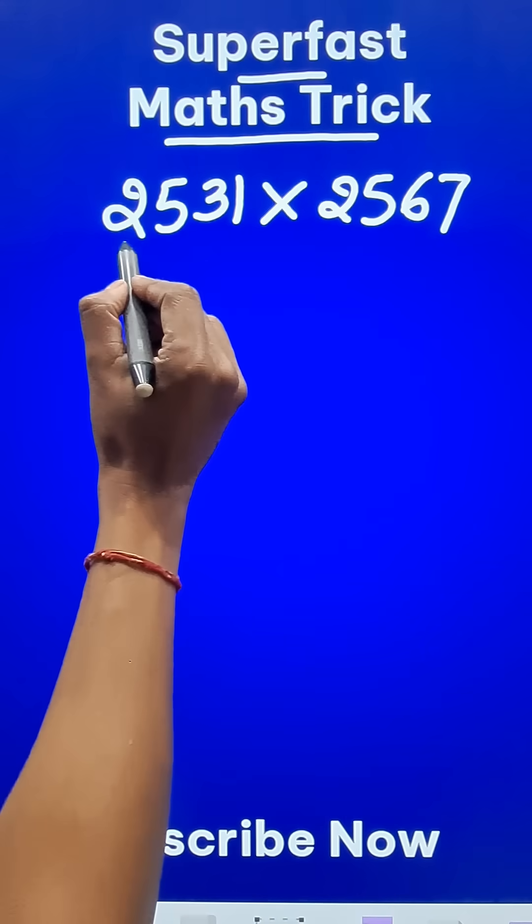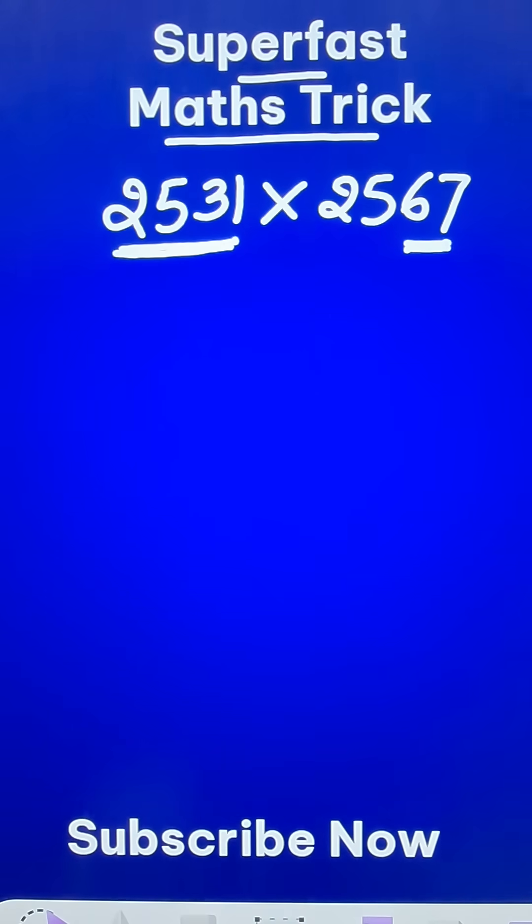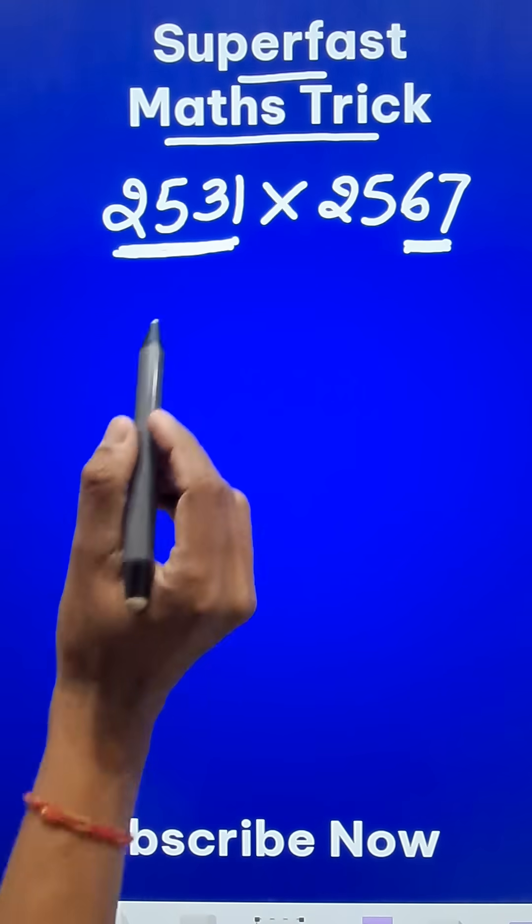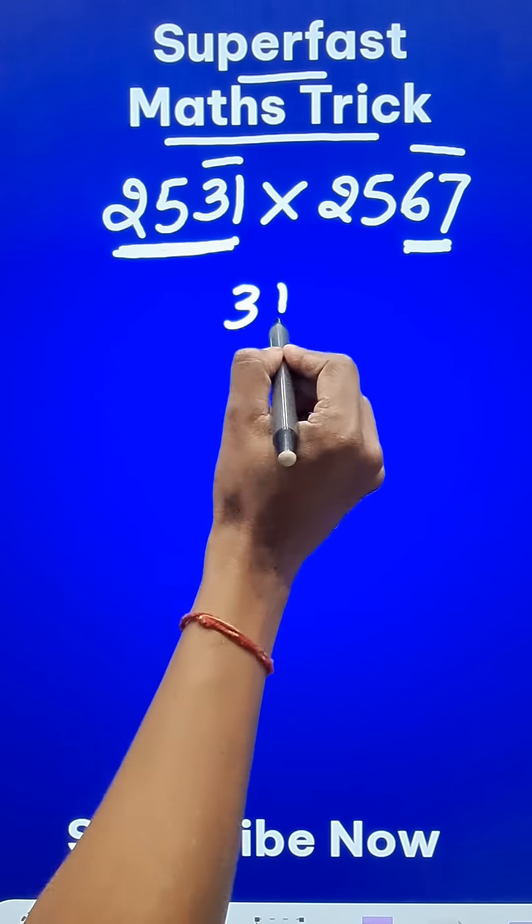Now the number here is 2531 and the last two digits here are 6 and 7. What you do first is to multiply the last two digits here and the last two digits here. So 31 multiplied by 67.